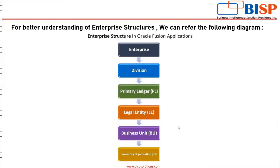Then it comes to division. Division is an optional segment, basically used for reporting purposes. Primary ledger is a type of ledger that we create under the general ledger module. Every accounting setup requires the primary ledger. Primary ledger comprises of four C's: currency, calendar, chart of accounts, and accounting method. If there is any change in any of the four C's, then we require another primary ledger.